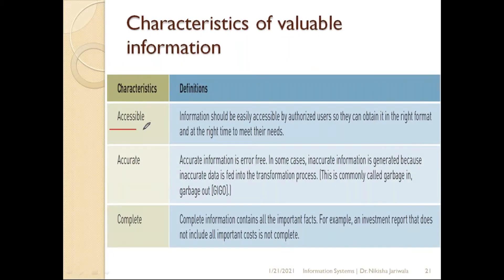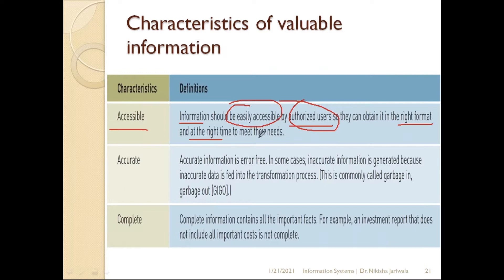The first characteristic is accessible. An authorized user means a user that has permission to access particular information. If information is easily accessible by an authorized user, we can say that information has the characteristic of being accessible.